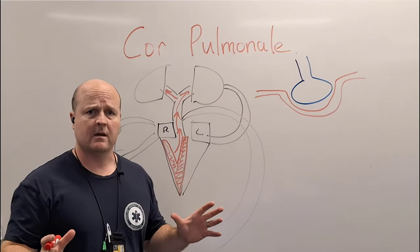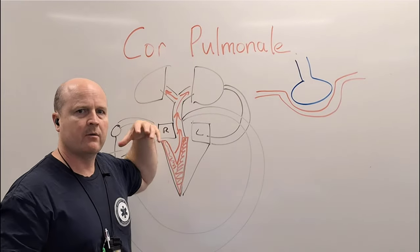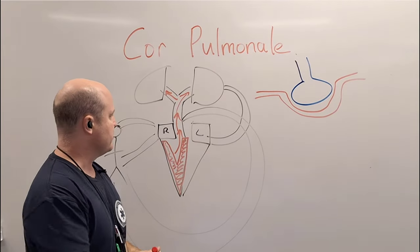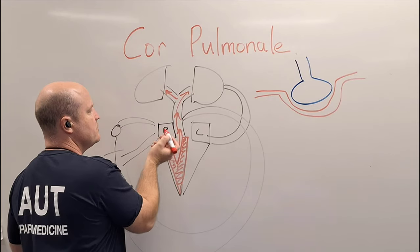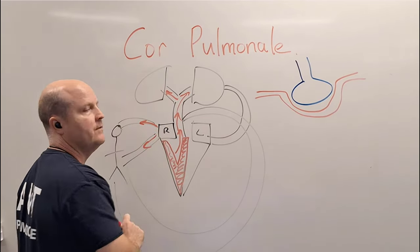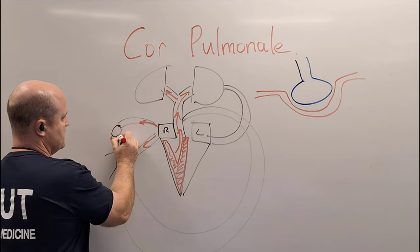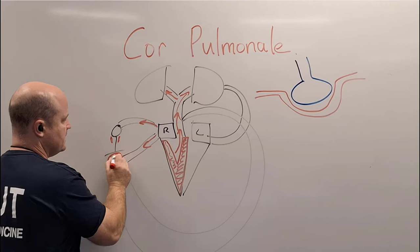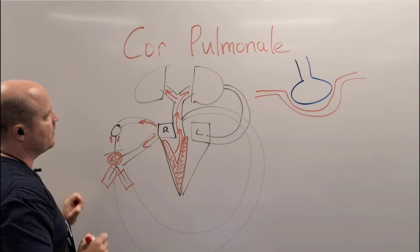So what are the symptoms going to be? They're normal respiratory symptoms, but now we're going to have those cardiac symptoms on top of it. Remember, if the blood is backlogging back into the right side — the ventricle, the atrium, and back into the vena cava — then we're going to end up with jugular venous distension, ascites, and peripheral edema.